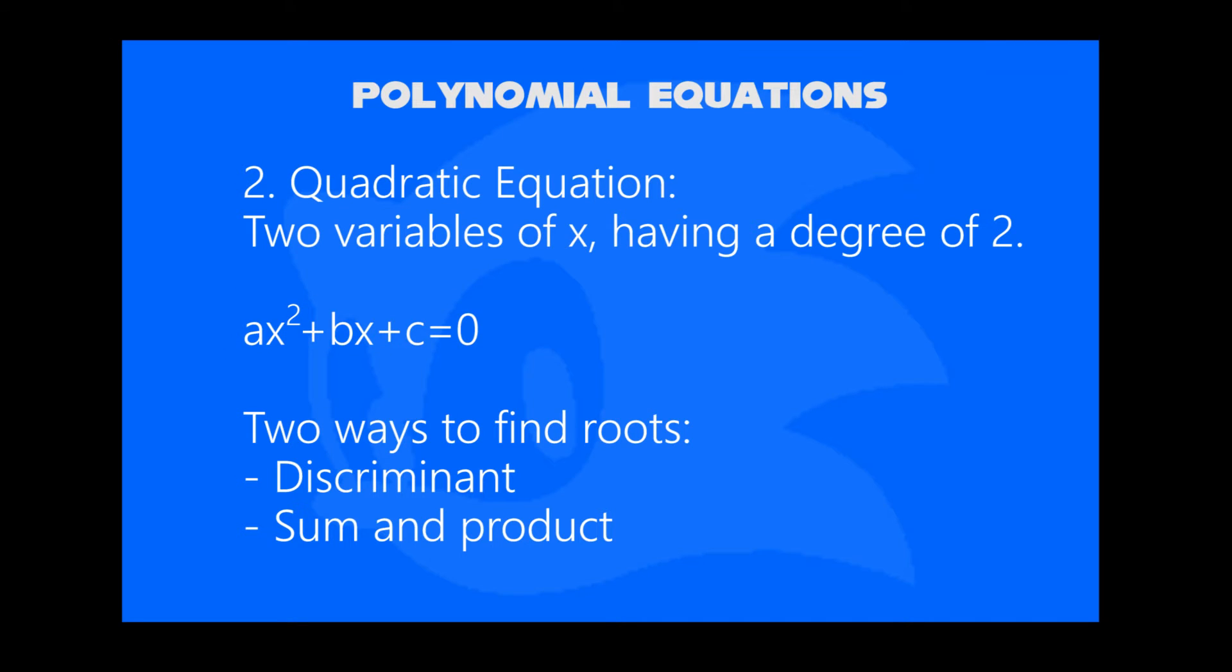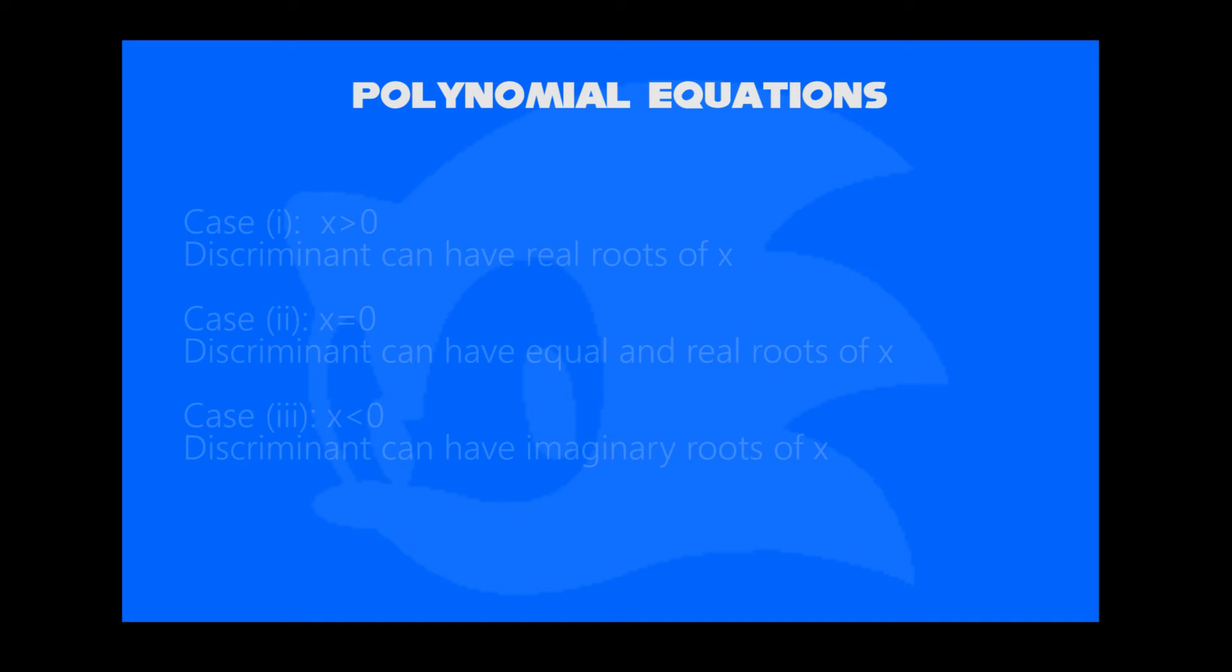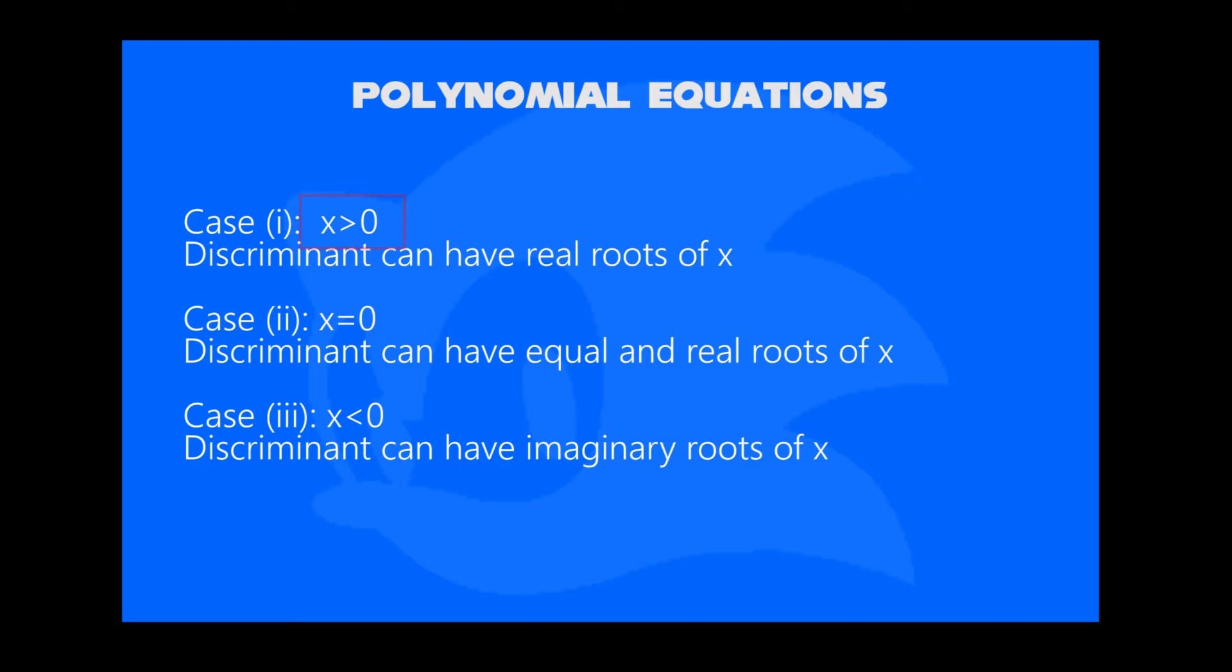We can find x in two ways, either by discriminant of roots or sum and product of roots. In discriminant we follow three cases: if x is greater than 0, then the roots are real. If x equals 0, then the roots are equal and real. And if x is less than 0, then the roots are imaginary.